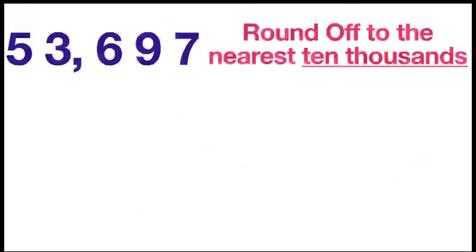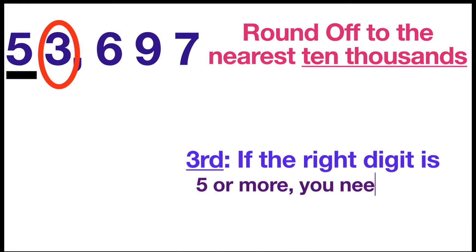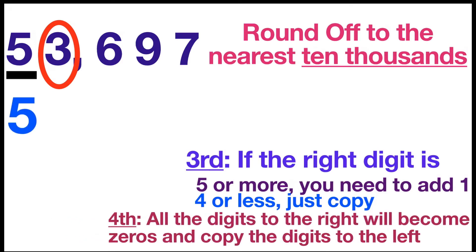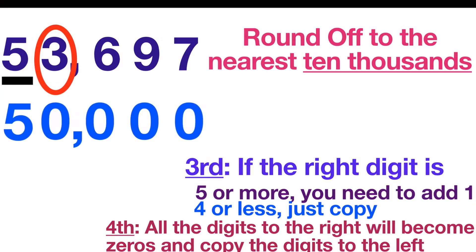Let's have another example: 53,697 round off to the nearest 10,000s. Let's underline the digit at the 10,000s place. Look to the right. If the right digit is five or more, we need to add one; if it is four or less, just copy. Since it is four or less, we will just copy digit 5. Then all the digits to the right will become zeros. The answer is 50,000.